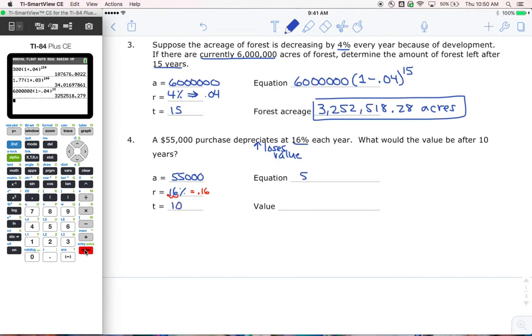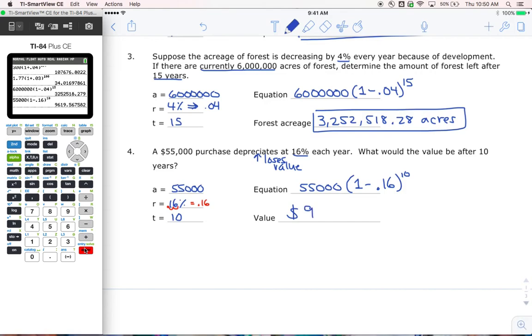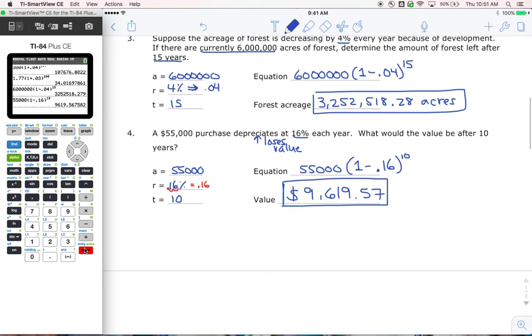So my equation is going to be 55,000. Now we've got a one - is it going to be plus or a minus? It's going to be a minus. Depreciates, loses value. So minus 0.16 to the power of 10, they told us 10 years from now. So let's figure out what that is. We've got 55,000, we've got one minus 0.16 to the power of 10. Remember this is the value of a purchase, so money - $9,619, and we're going to round up to 57 cents. It was worth 55,000, it's losing value every year, now it's worth over $9,000.